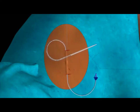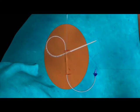Take the 16 French gauge tear-away sheath dilator and pass it over the guide wire into the pleural space to a depth of no more than 7 centimeters. Once in position, remove the guide wire and dilator, ensuring the sheath remains in position.